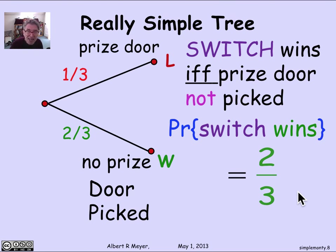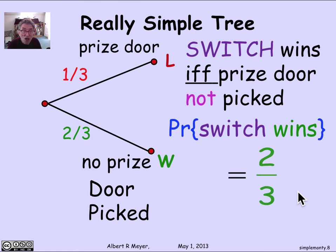The message here is that the tree you come up with to model experimental outcomes is really a modeling process, and there may be many models that work to capture a given scenario. It will often pay off to try to find a simpler tree to make the analysis simpler.